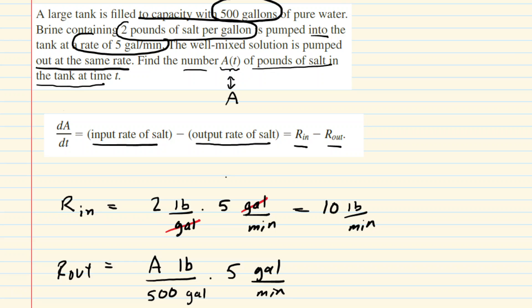Notice that dimensionally the gallons will cancel out. We multiply and end up with 5A over 500, which comes out to pounds per minute. This can and should be reduced — we divide the top and bottom by 5, and we end up with A over 100, measured in pounds per minute.